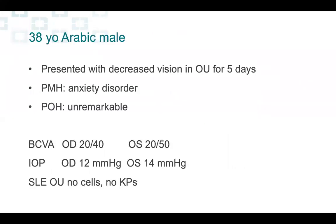This is the case of a 38-year-old Arabic male. He presented to our clinic with five days of decreased vision, and nothing remarkable in the past medical history and past ocular history. The best corrected visual acuity in the right eye is 20/40 and 20/50 in the left eye. Pressure is fine in both eyes, and there's no degree of inflammation in the anterior segment.